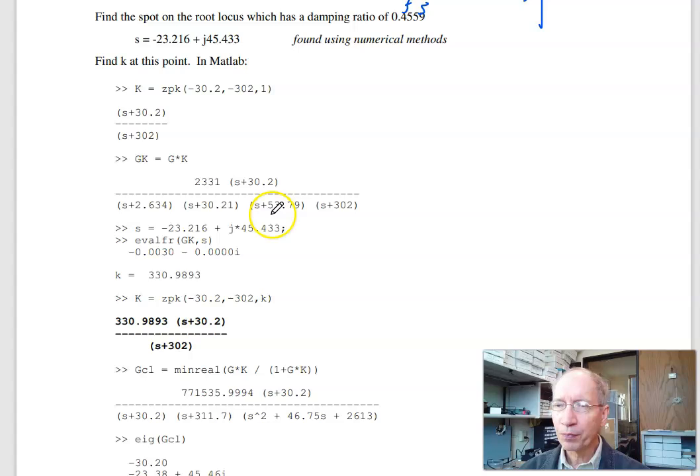To find k, pick k so that G times k is minus 1 at that point. So here's G times k. There's my s. Evaluate, and I get a negative real value. Gain's wrong. Pick k to make the gain 1. k is 330. So there's k(s).